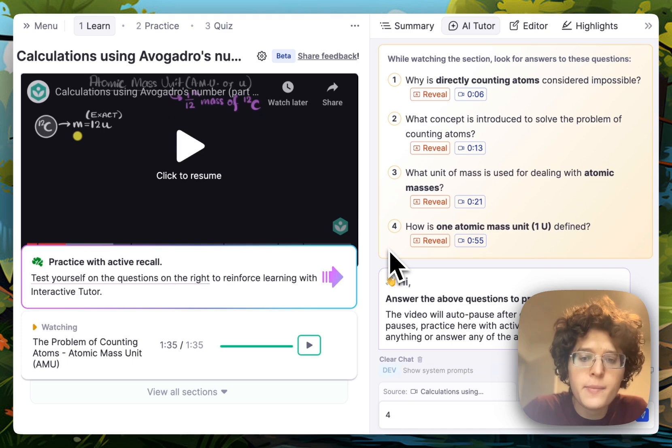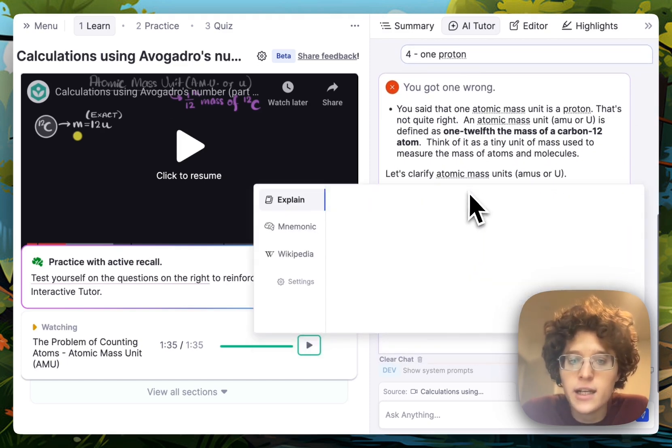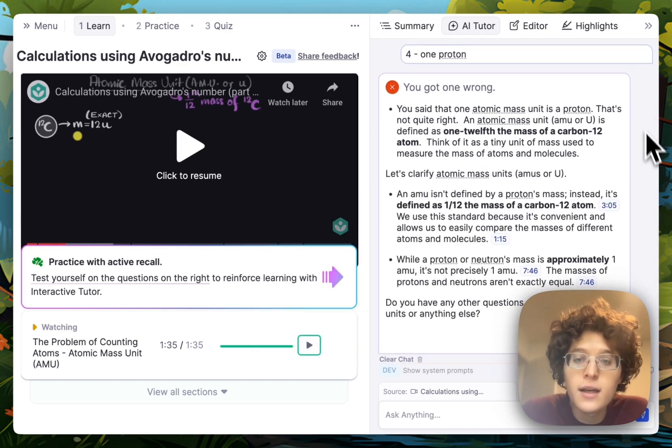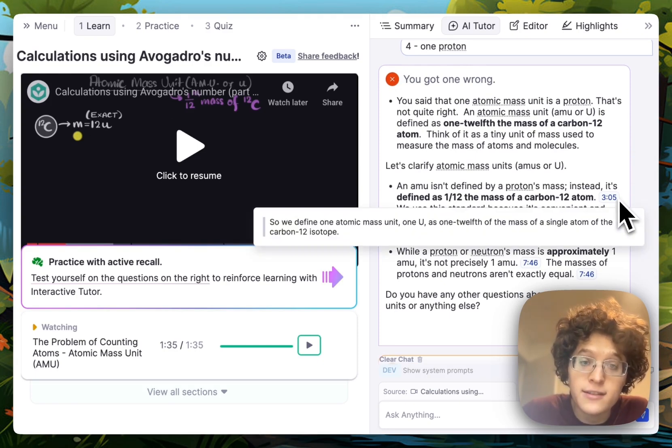we can start with number four here and say that it's one proton, which is on the right track, but not quite right. So the tutor told me that I got it wrong, and then immediately helped me clarify my understanding by teaching me the core idea that it's one-twelfth of the mass of the carbon-12 atom. You can see that key points of the video are also cited here, so I can jump back to that point if I want to rewatch it.